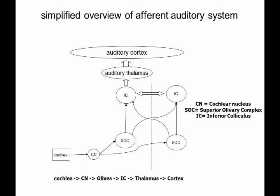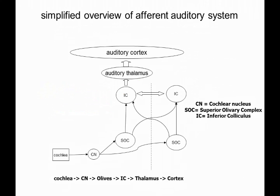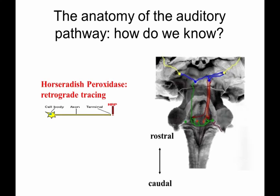How do we know these things? We're talking about two things: anatomy — the connections, where things are and what they are — and physiology, which is what's actually happening in there, why we have these structures, and what they are doing. Anatomically, how do we know these connections?